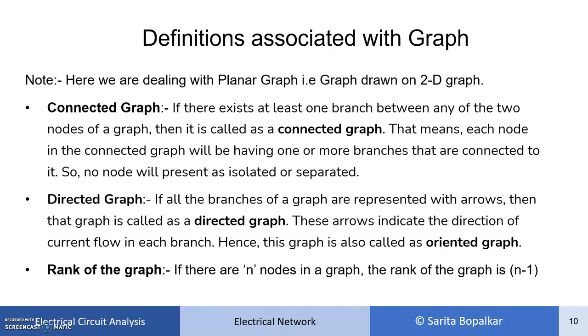Now, many times there is a question: what is the rank of the graph? If there are n nodes in a graph, the rank of the graph is n minus 1.